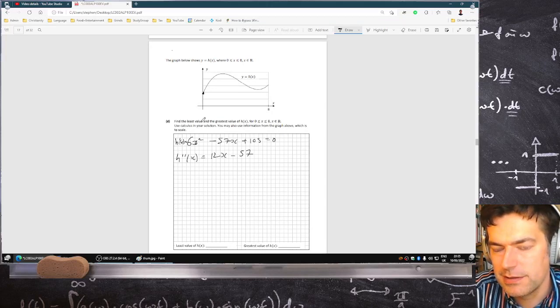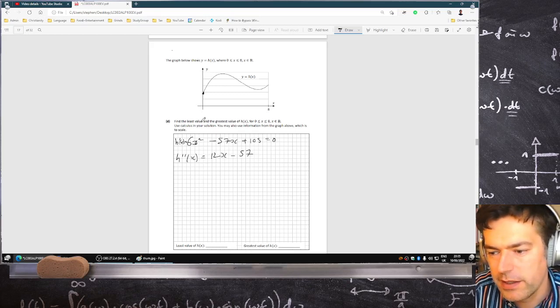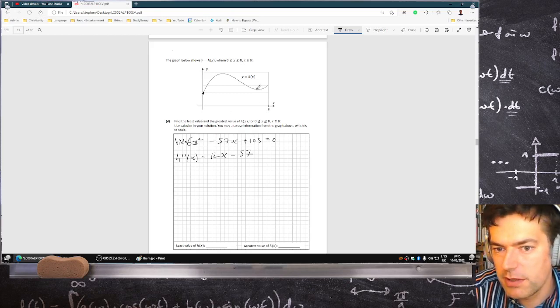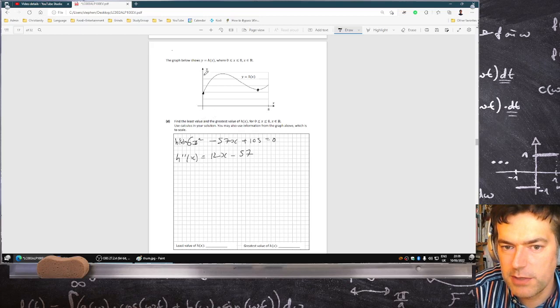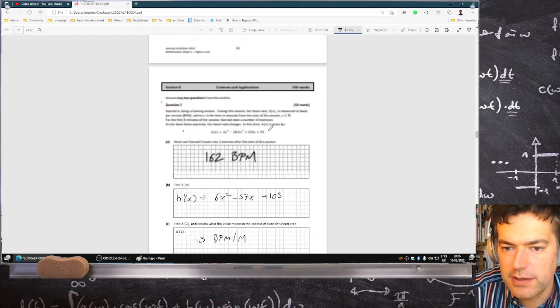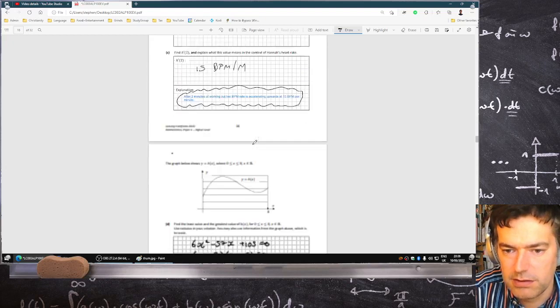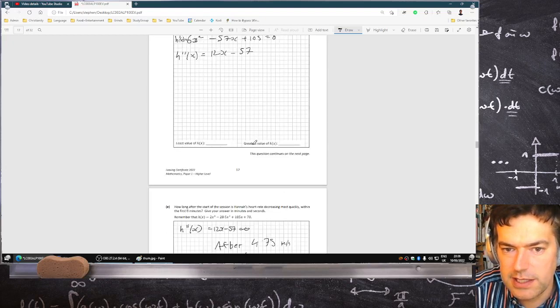So it's the global minimum. The answer I gave was only a local minimum. I gave this one, which is wrong. So the minimum is when x is 0. And when x is 0, you can see the minimum is 70. So that's the least value.